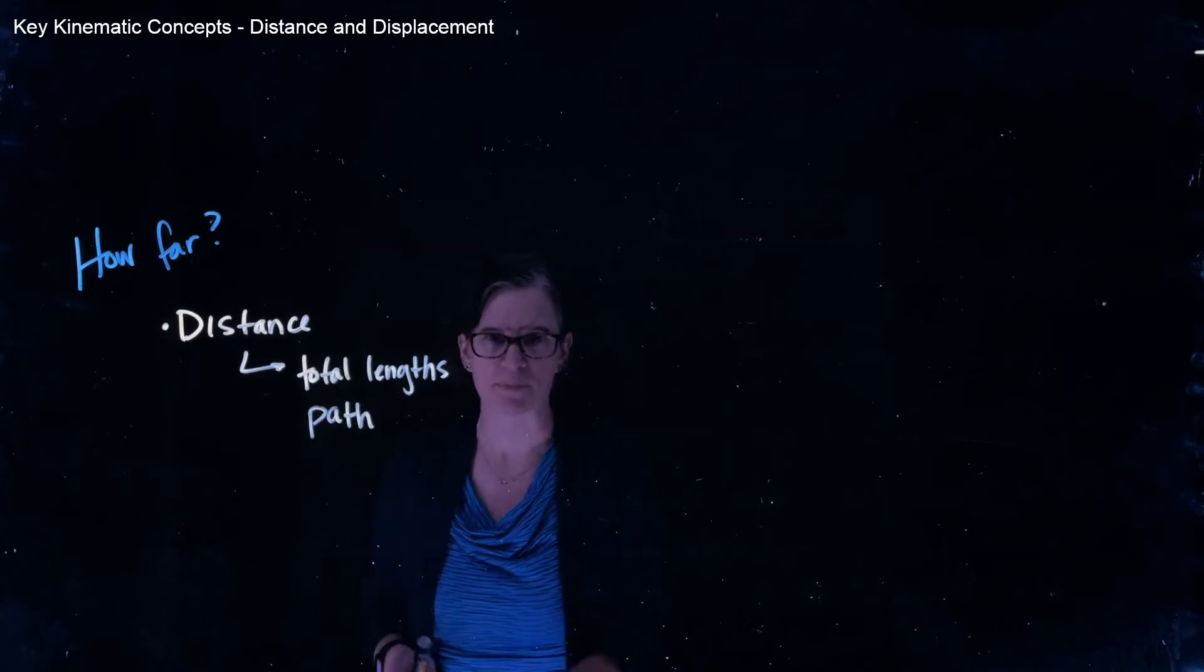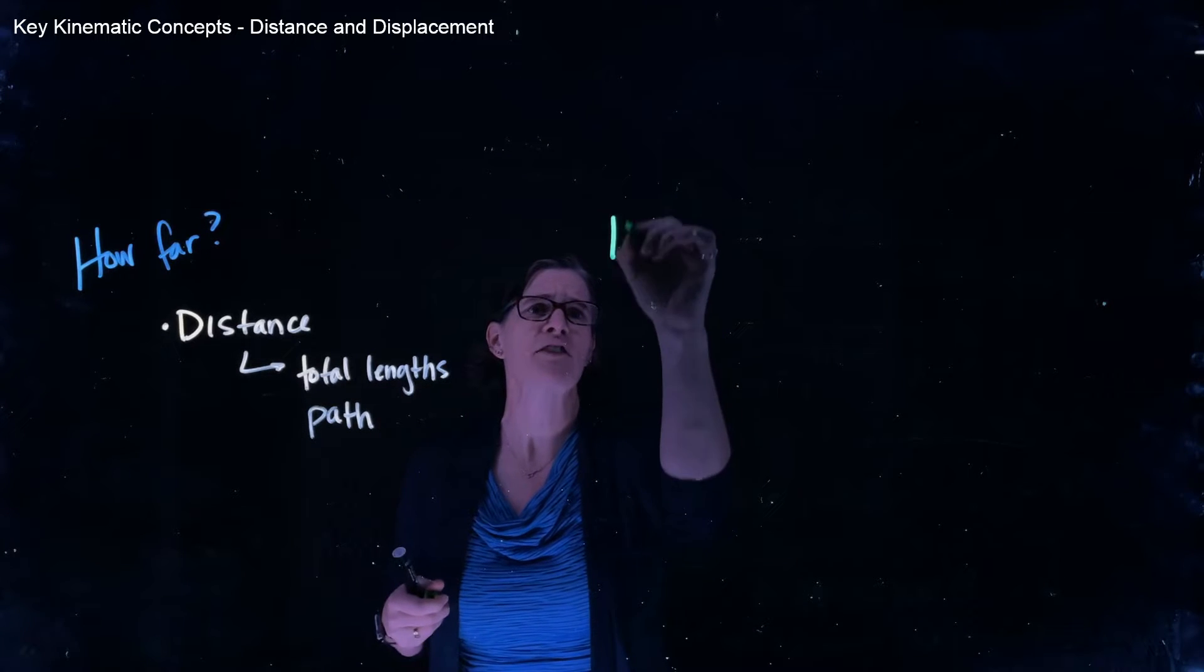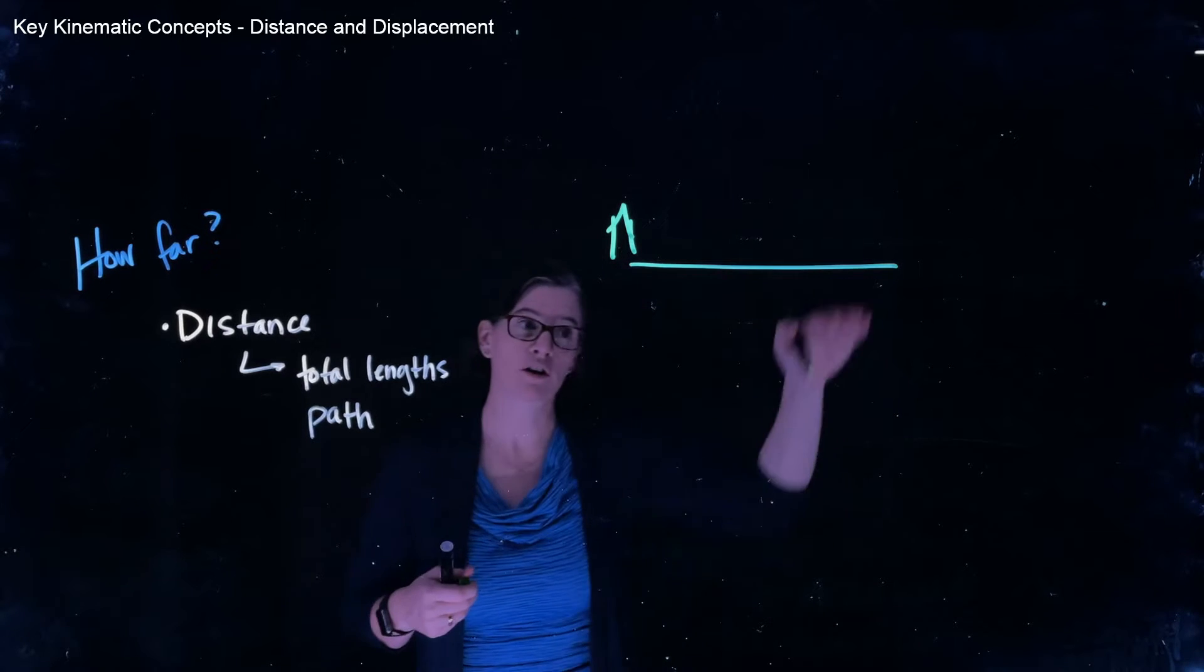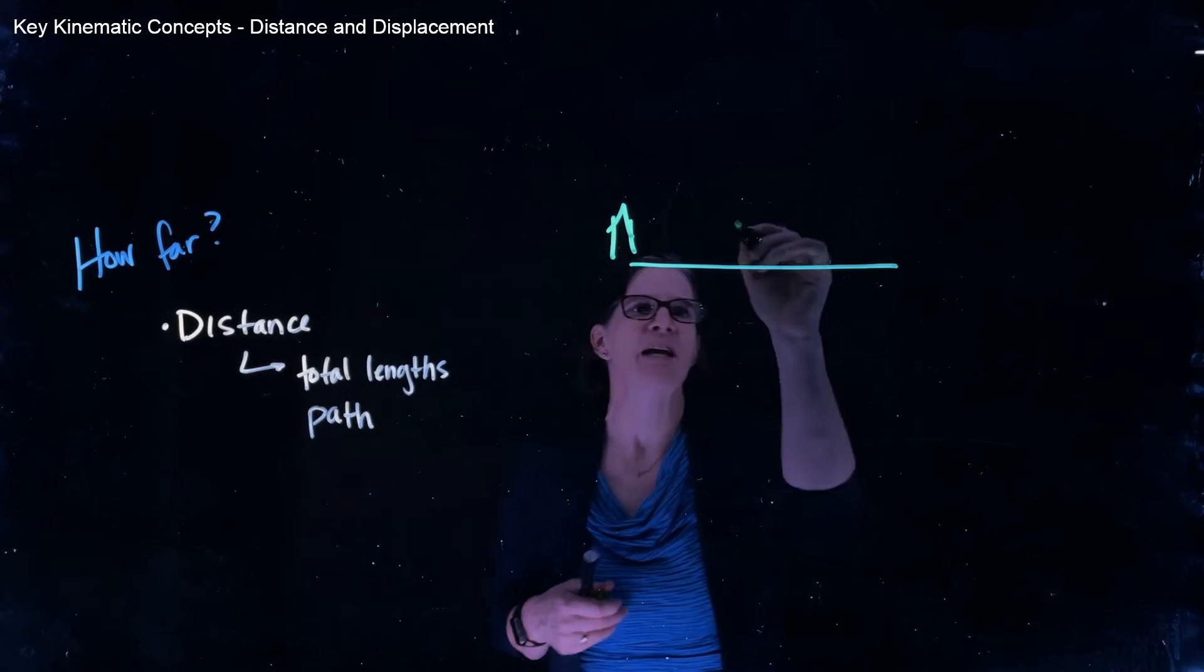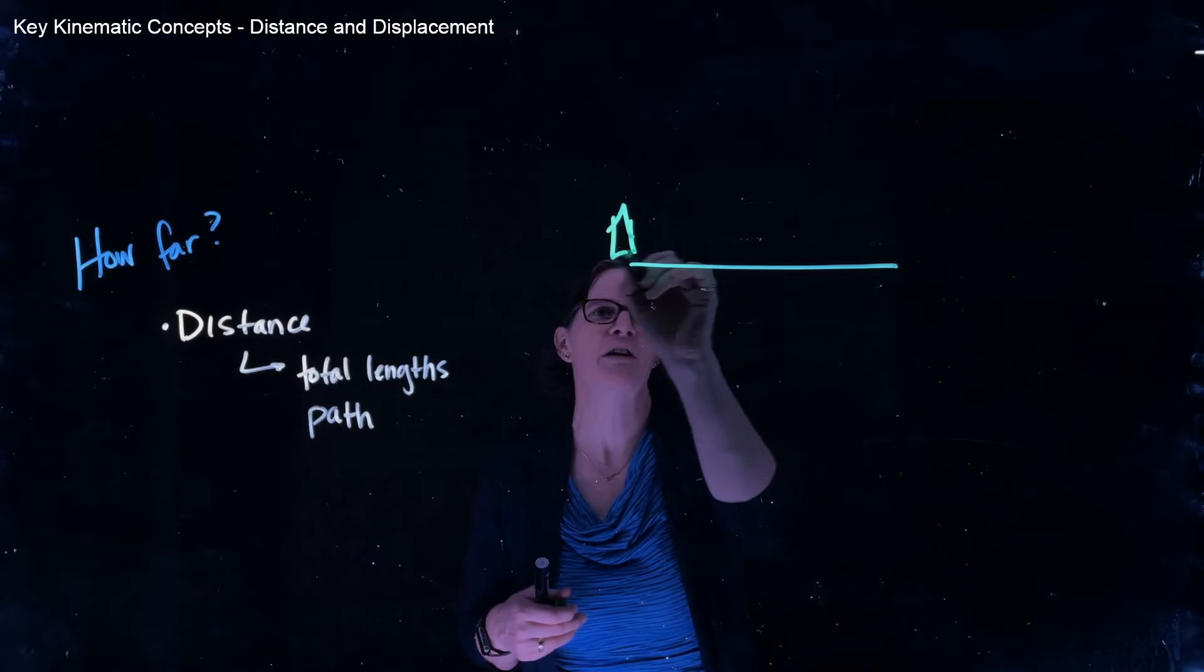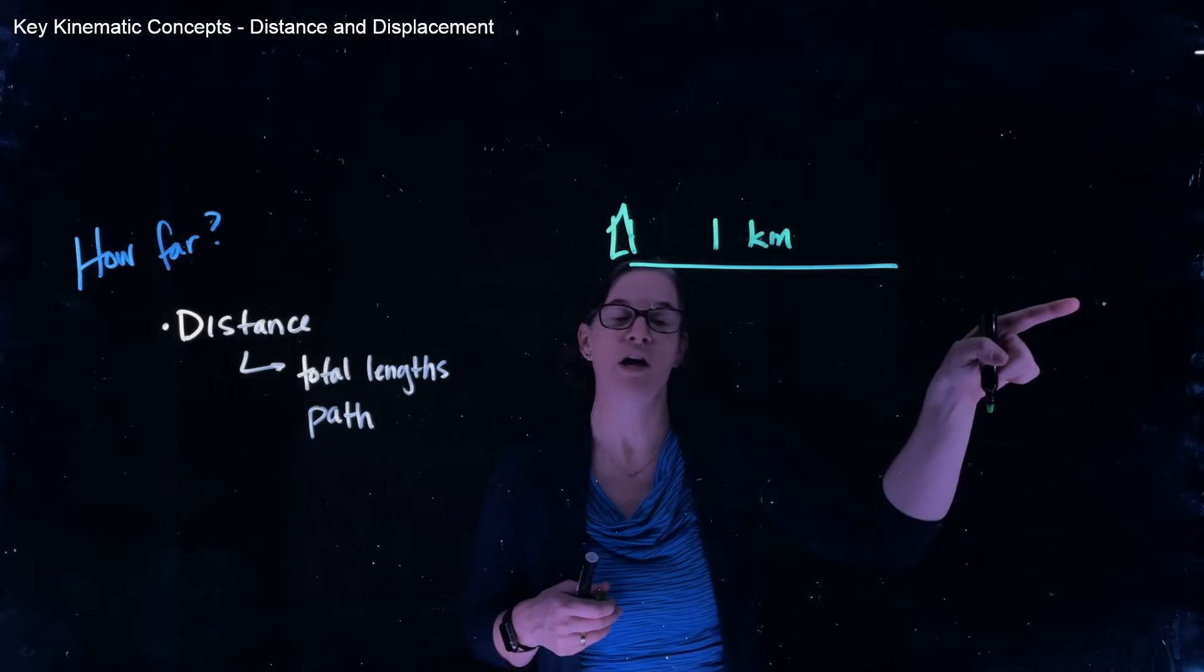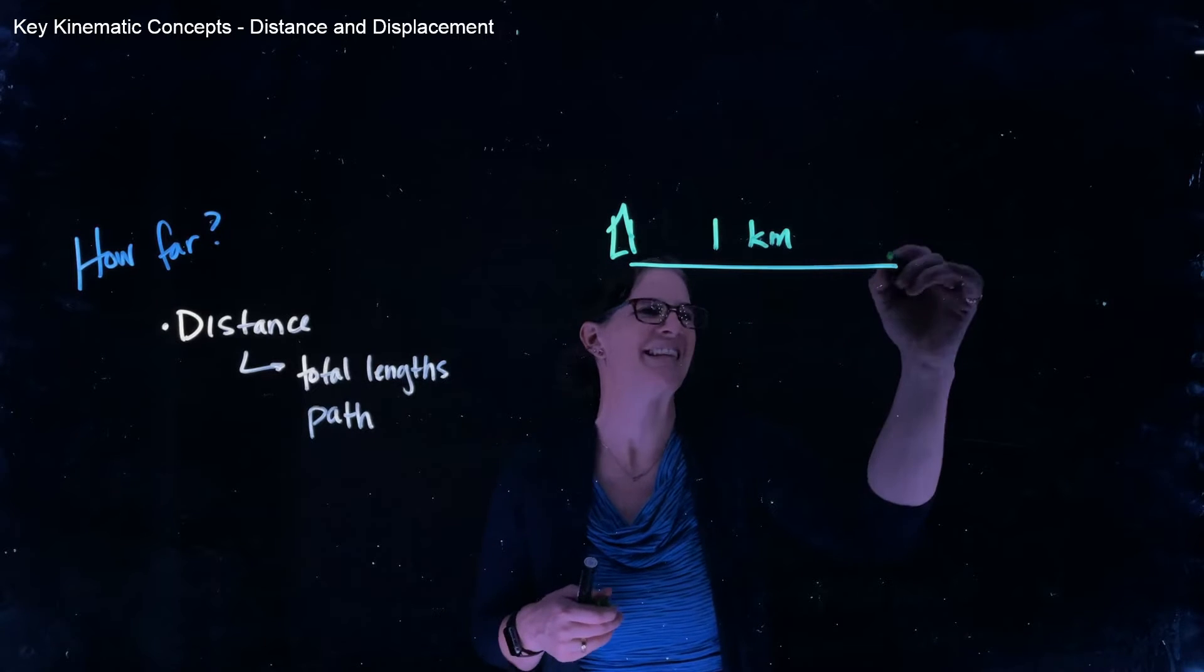So let's look at an example. Let's imagine that we have a farmer and she is going to walk along her rectangular field. And so she starts at her farmhouse and she walks one kilometer to the east.